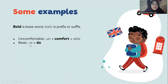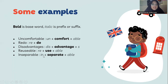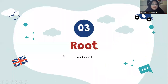More examples: 'disadvantages' — 'dis-' is the prefix, 'advantage' is the base word, and '-s' is the suffix. 'Reusable' — 're-' is the prefix, 'use' is the base word, and '-able' is the suffix. 'Inseparable' — 'in-' is the prefix, 'separate' is the base word, and '-able' is the suffix.